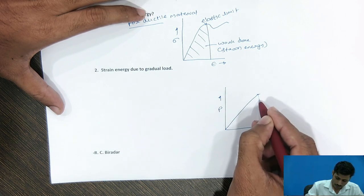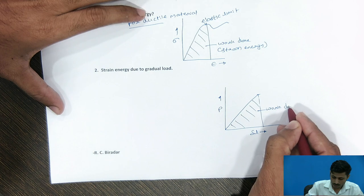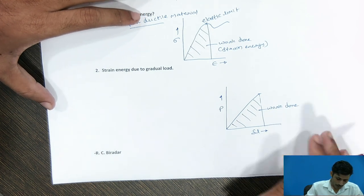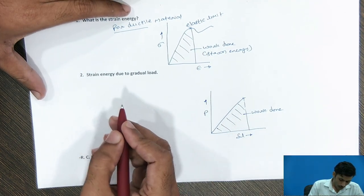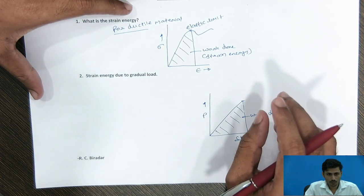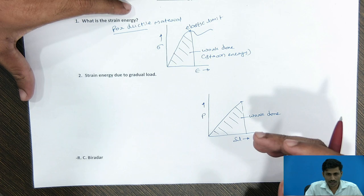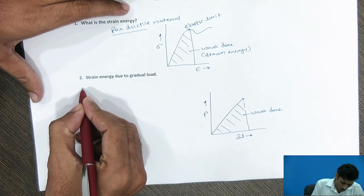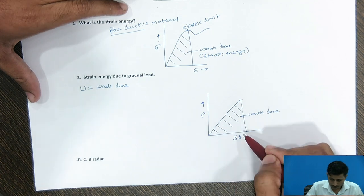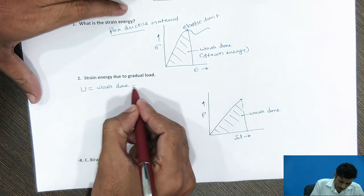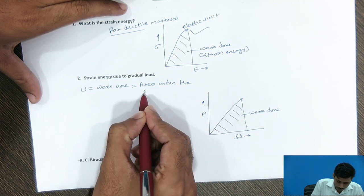And the area under this P and delta L curve is nothing but the work done in a material or body. And now, we are going to denote the strain energy by a capital letter U. And as I said, the strain energy is a form of potential energy. And amount of strain energy can be utilized to do the mechanical work. So, we can equate the strain energy as work done. And the work done from this graph P and delta L curve can be represented with area under the curve. Area under the P and delta L diagram.